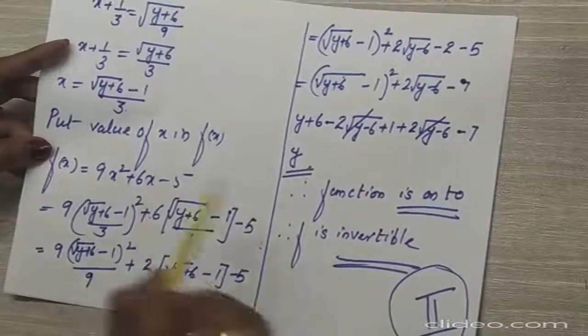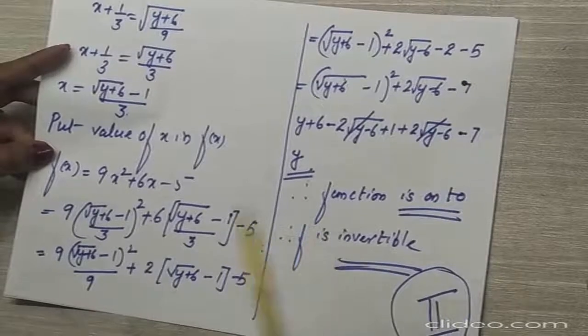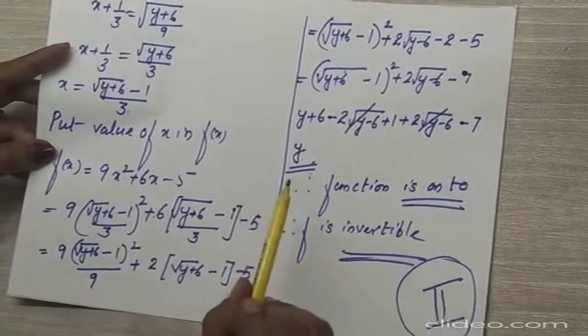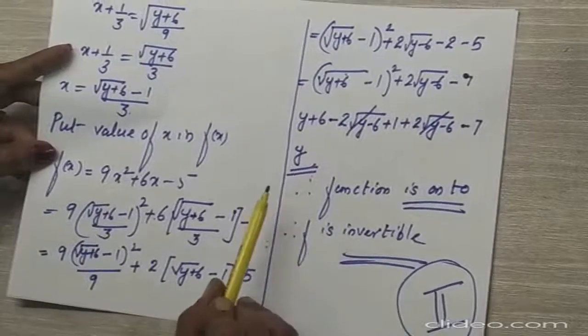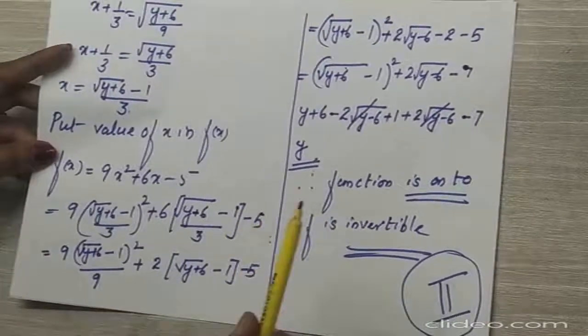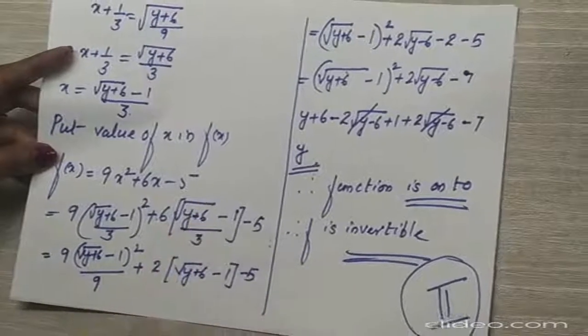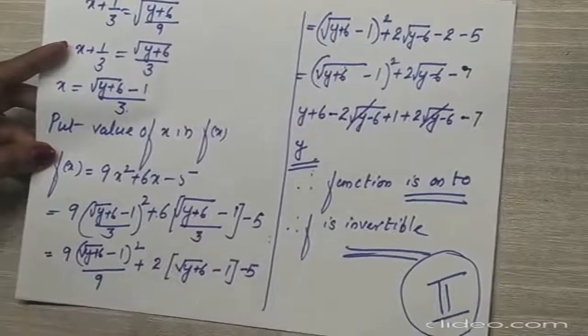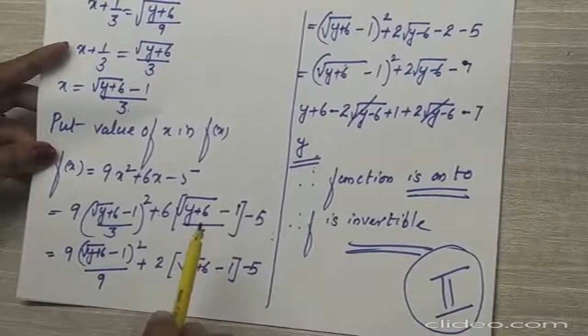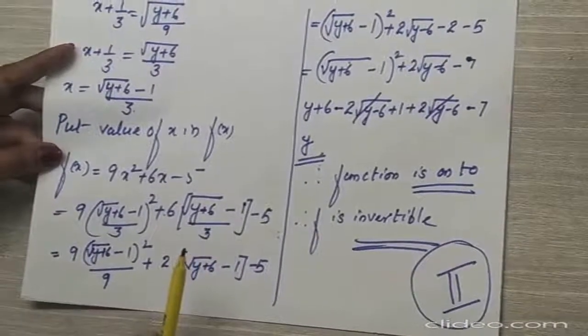It's not necessary to follow only the first method — you can also use the completing the square method. Both approaches lead to the same answer. Thank you.